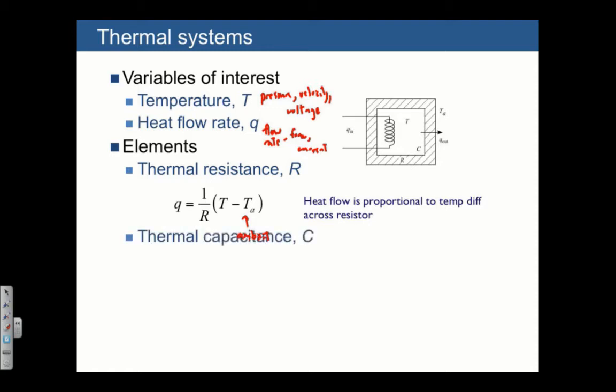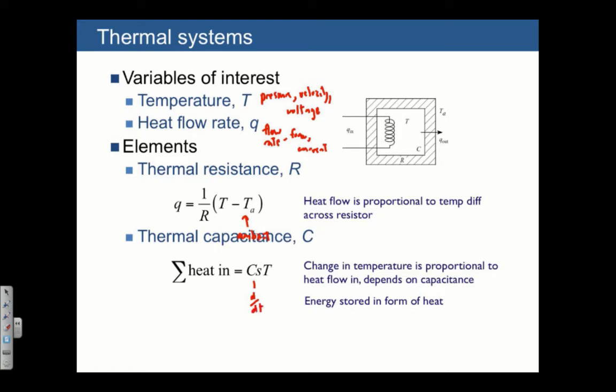There's also a thermal capacitance, C, which describes the ability to store energy, generally as an increase in temperature. The element law is the total heat flowing in is equal to C times S times T, where, again, S stands for the time derivative. And you can think of this equation as basically saying that the heat that flows in is integrated or stored as temperature. And the amount of temperature rise is going to depend on C. The larger the capacitance, C, the smaller the temperature rise for a certain amount of heat in.